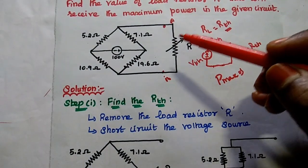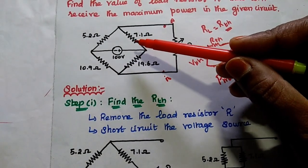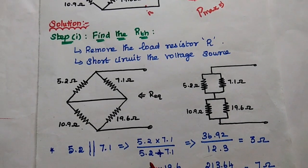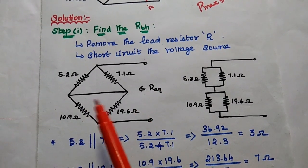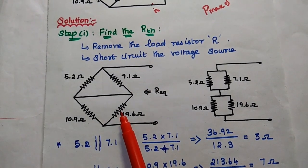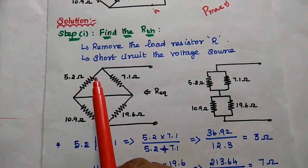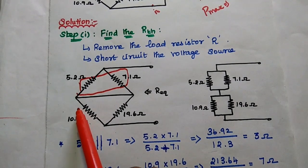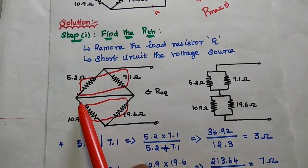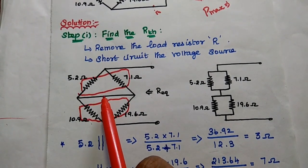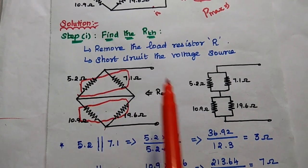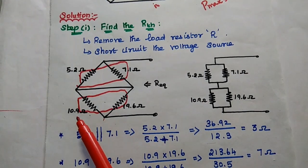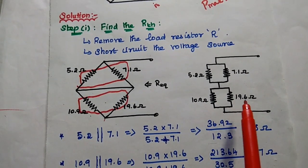We are going to remove this load resistor and then short circuit the voltage source in the given circuit. This circuit can be redrawn to find out the Thevenin's equivalent resistance. We remove the load resistor, short circuit the voltage source, and this is the simplified circuit to find the equivalent resistance. We are going to find out the total internal resistance for this circuit.